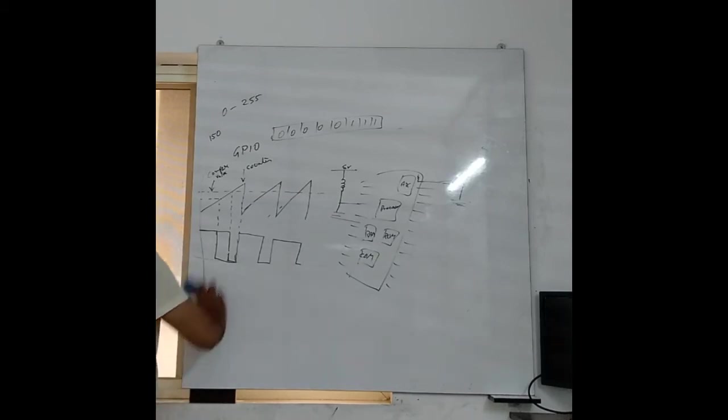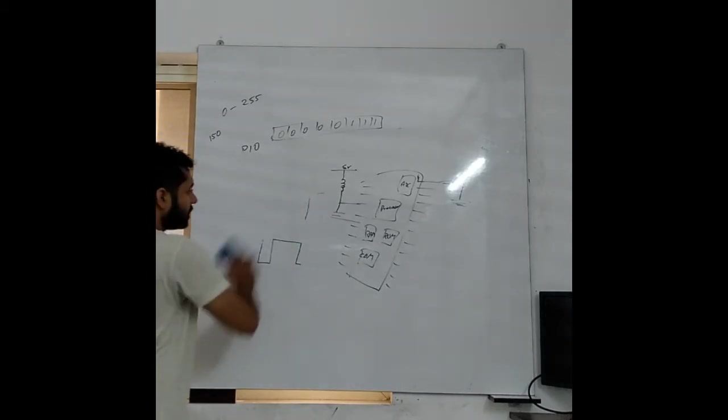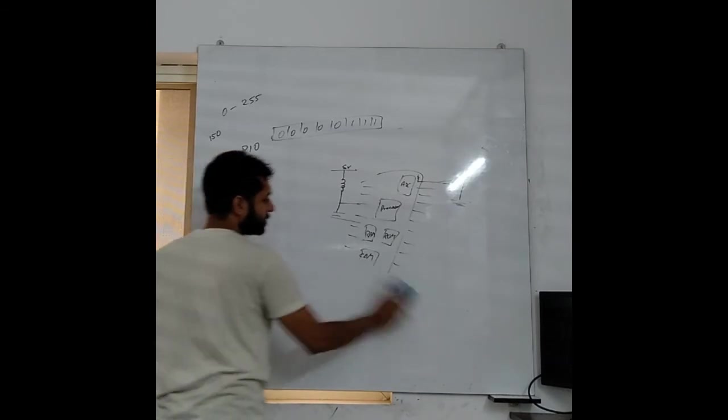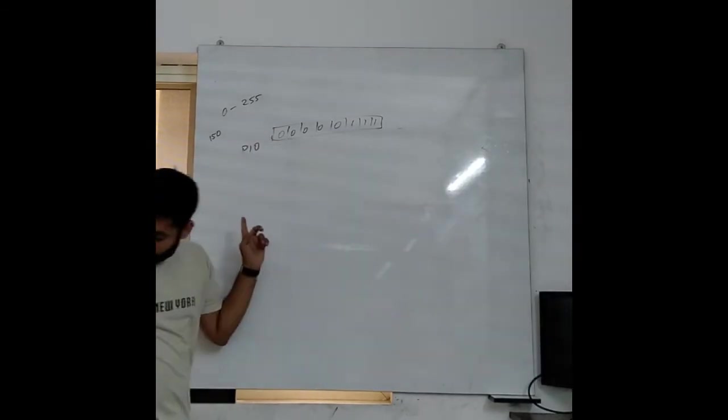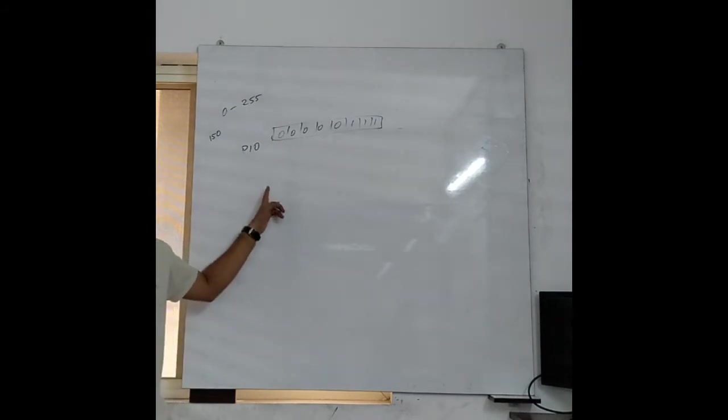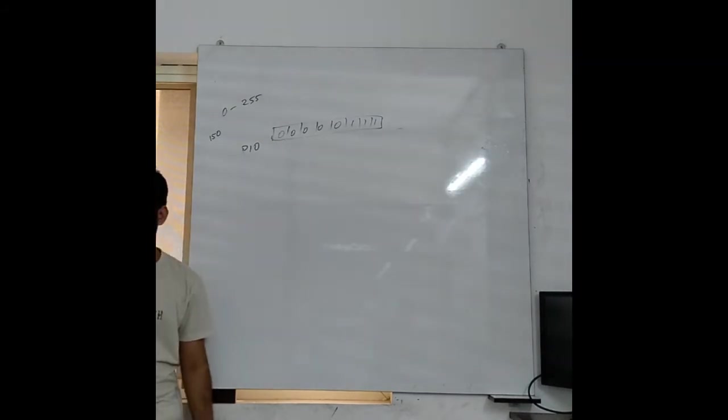So timer, also what we have, we have a counter where the resistor that is associated with counter will first set it up. One more point with PWM, and that is correct for timers also, is that PWM uses timer for its application. That counting, that saw tooth which is there, it is generated from timer.